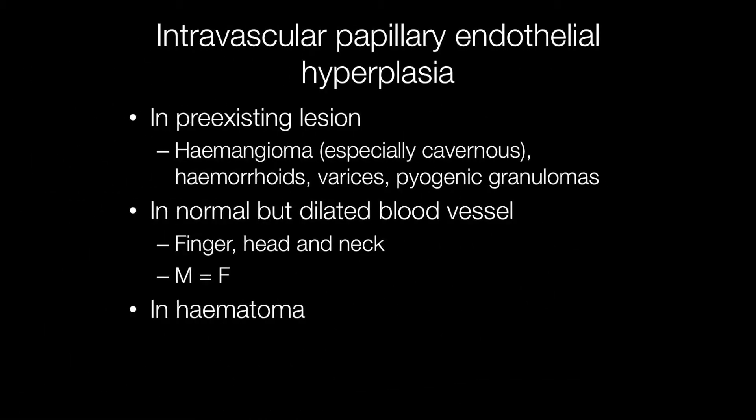These lesions may arise de novo in the pure form, where they occur in a dilated vein — usually in the finger or a vein in the head and neck — but they may also arise in pre-existing lesions such as haemangiomas, especially cavernous haemangiomas, haemorrhoids, varices, urethral caruncles, and pyogenic granulomas.